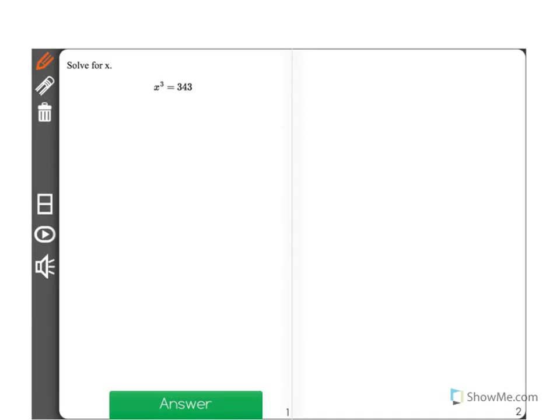x cubed equals 343. Solve for x. Now when we're trying to solve for x, what we want to do is get x all alone on one side of the equation.